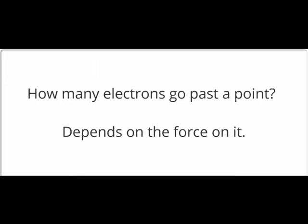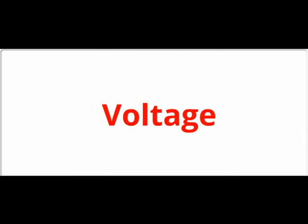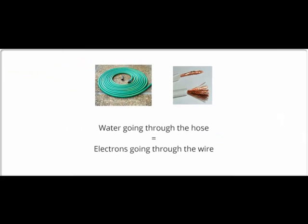So how many electrons go past a point? Well, that's current, but that also depends upon how much force there is. The more force you have on the electrons, the more you're going to go past. That force is called the electromotive force, or EMF. It's also known as voltage. Now, the higher the voltage, the more electrons flow through, the higher the current.